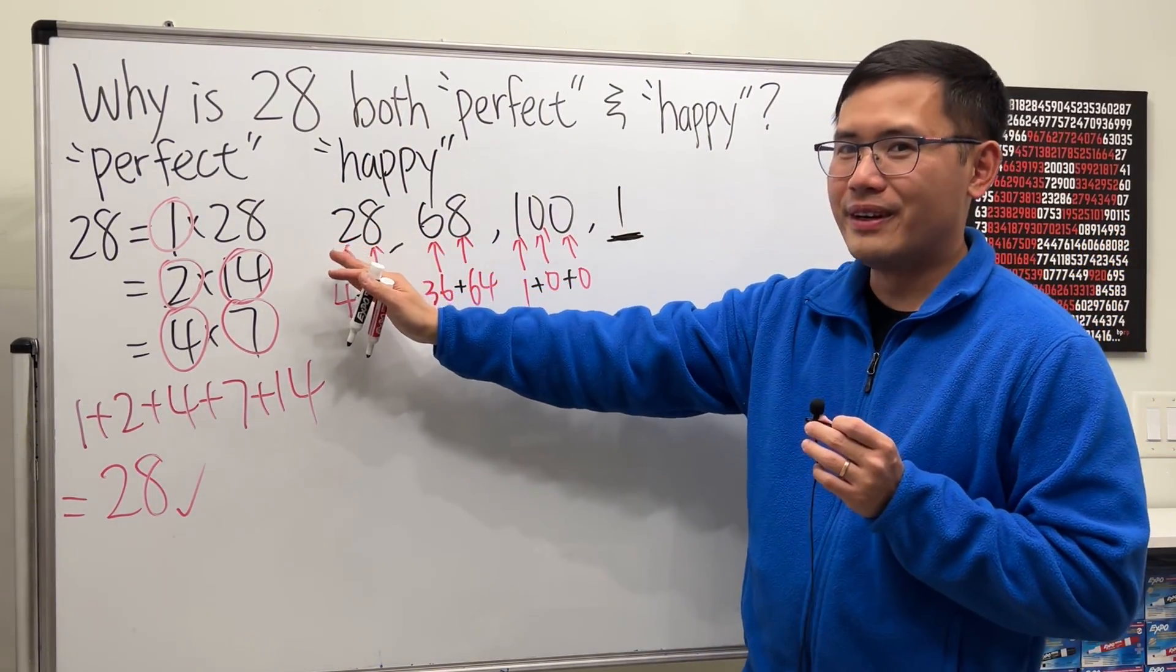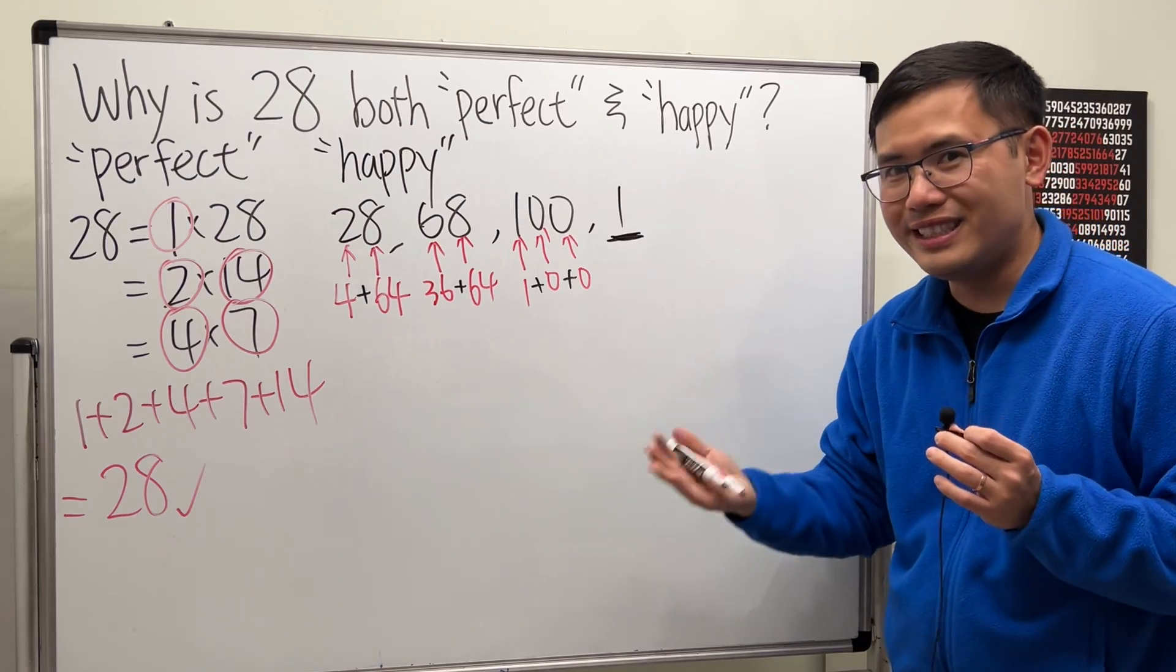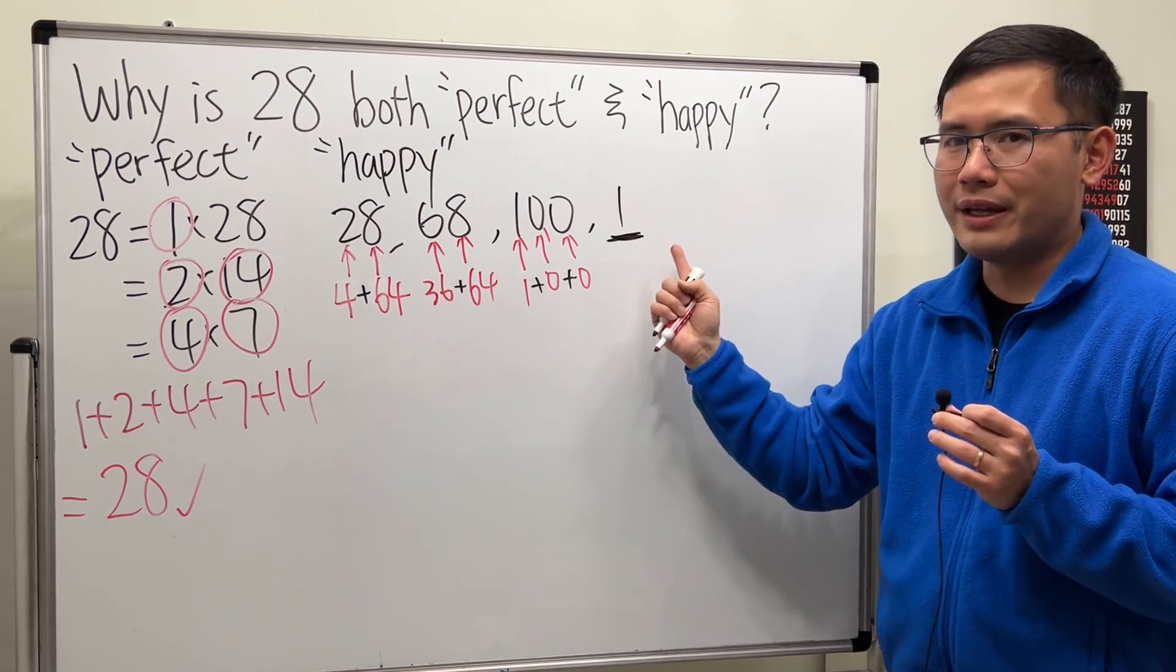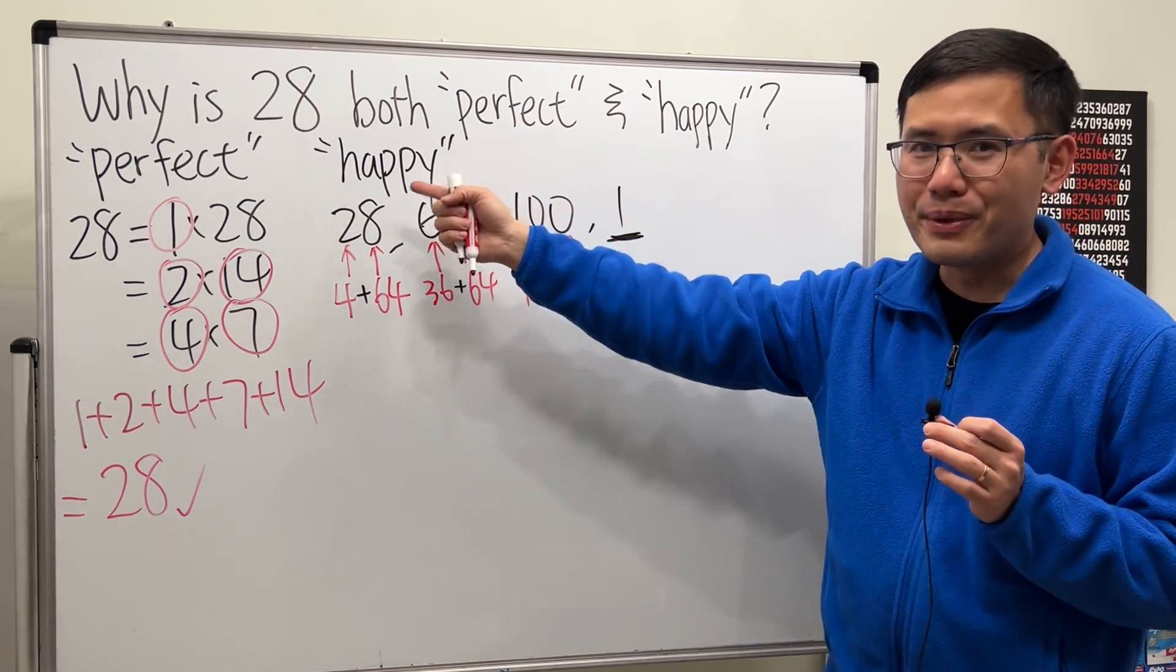Whenever you start with a number, and you do this, produce a sequence, if it ends up to be 1, then you get a happy number.